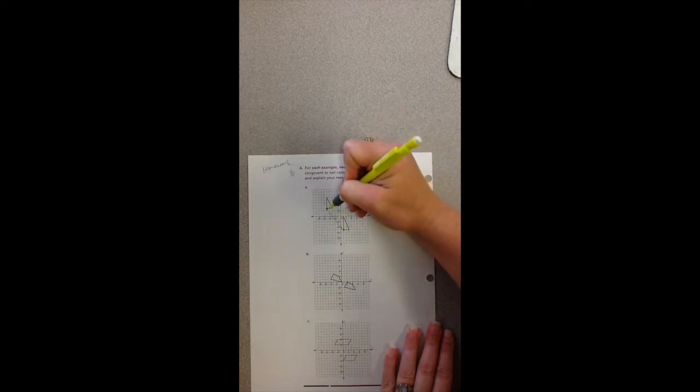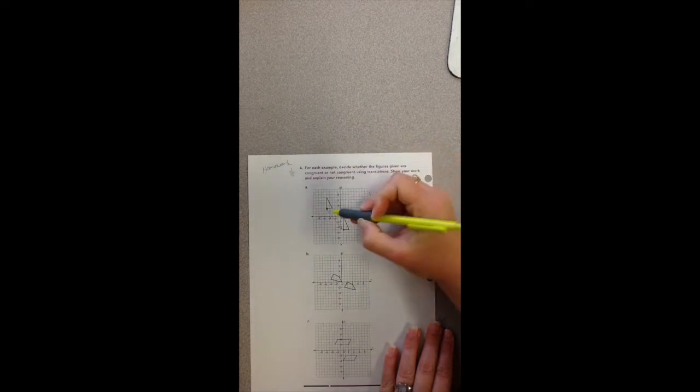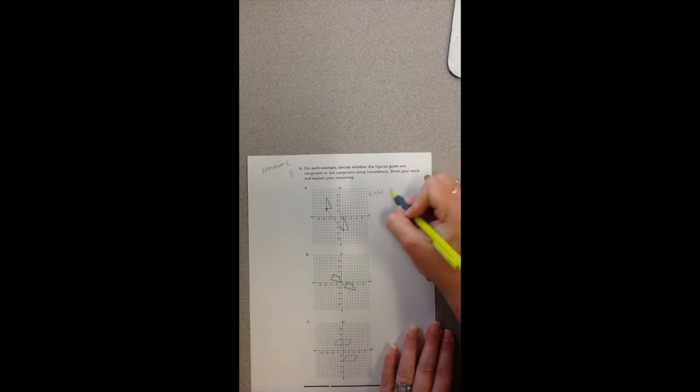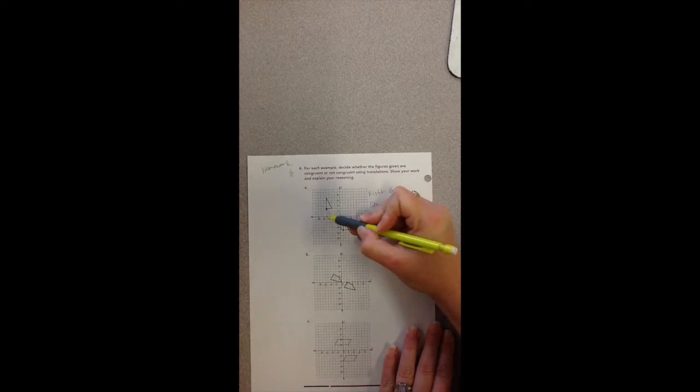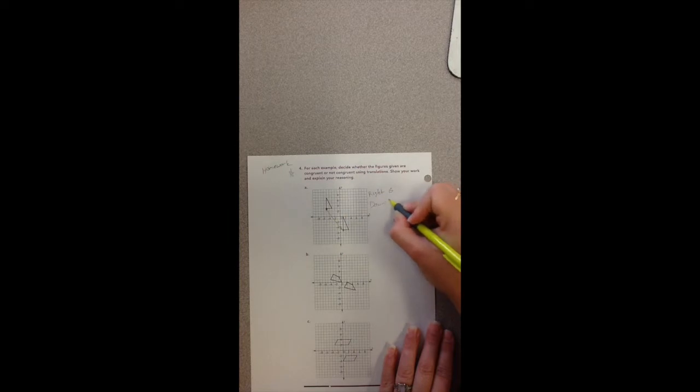One, two, three, four, five, six. And then it had to go down one, two, three, four, five, six, seven, eight. So if that's true for the other points, then this was a translation. Because remember, with translations every single point, every single aspect, had to be moved at equal amounts.